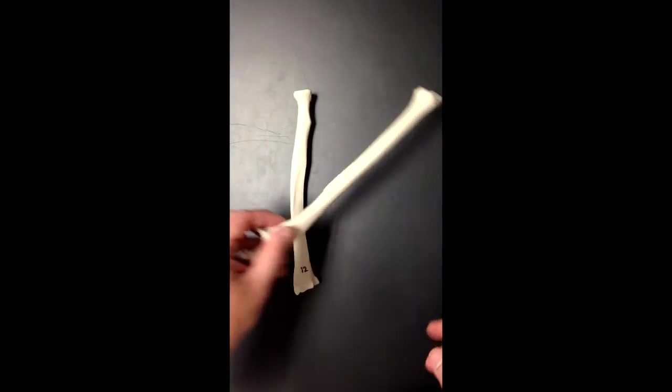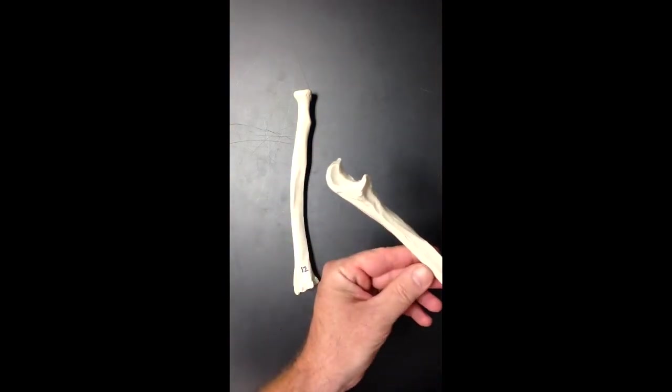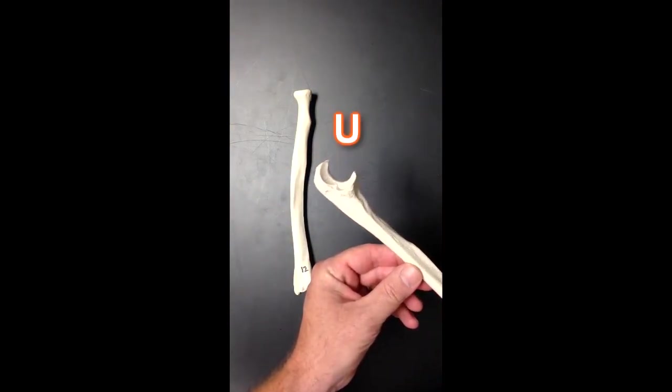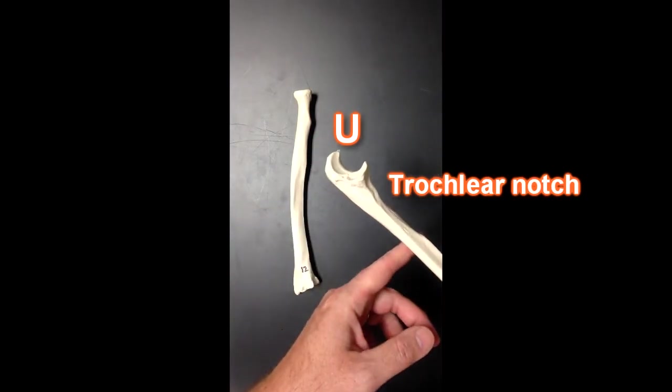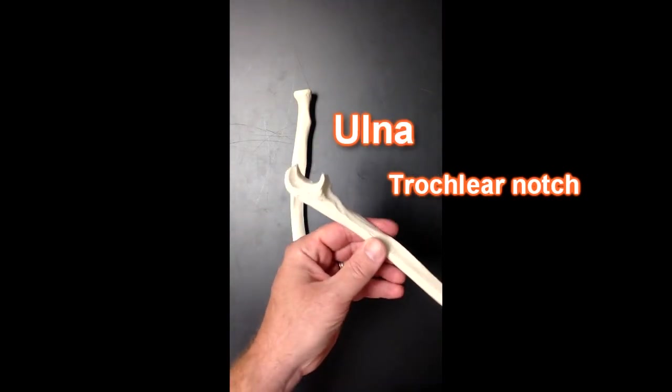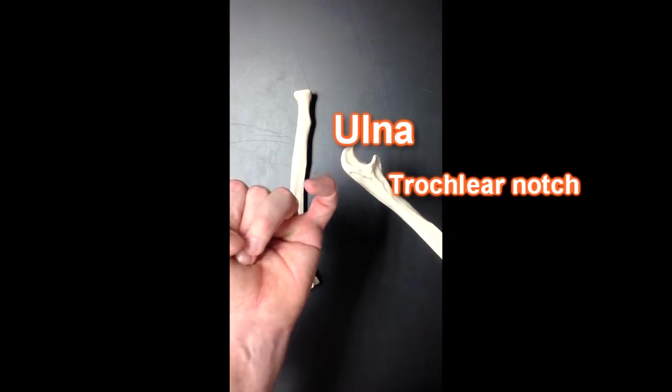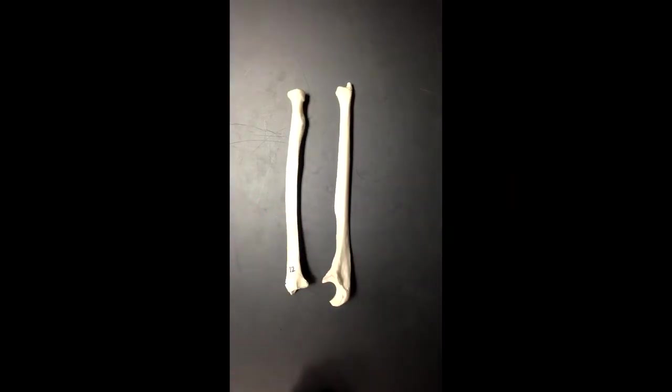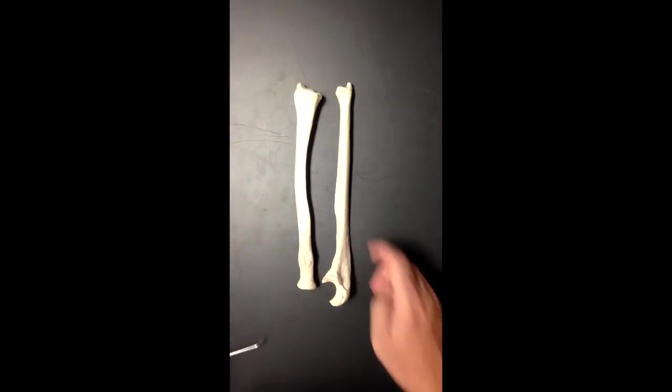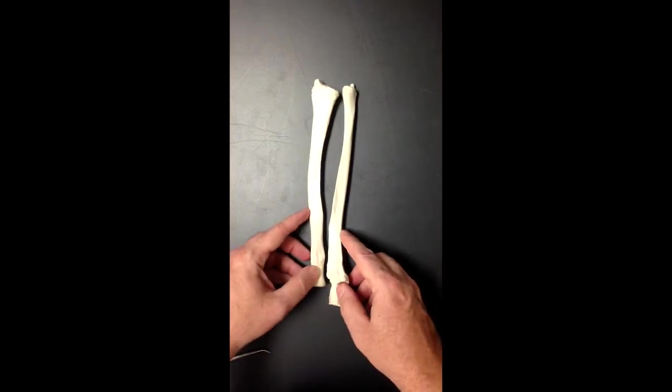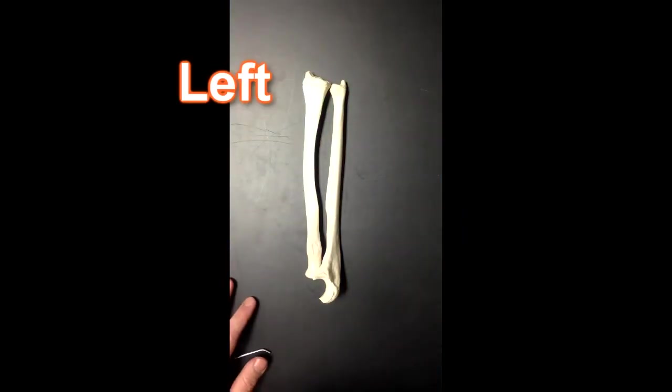If we were to look at the ulna bone we would see there's a big clue on it. Look at that U right there. That's called the trochlear notch and that U indicates that this bone is an ulna. Remember U for pinky side. That should help you identify the difference between which one's on the lateral side, radius, and which one's on the medial side, the ulna. So this means we're looking at the forearm bones on the left side of the body.